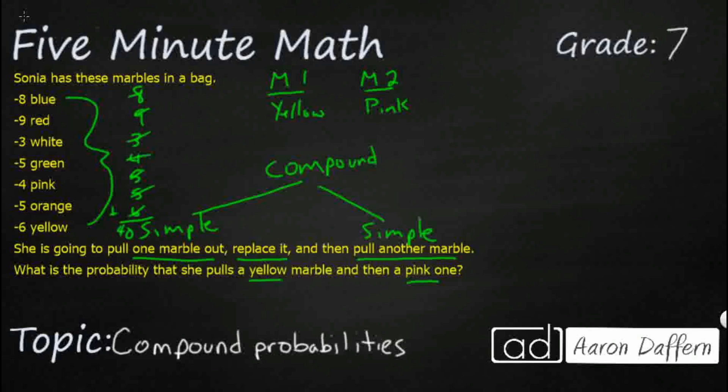All right, so yellow is going to be, let's look at this first one, 6. So, 6 out of 40, 6/40ths is my yellow probability. Then, I put it back, because if I didn't put it back, then my probability, the denominator would change down to 39, but it's going to stay the same. Pink is going to be 4 out of 40ths.